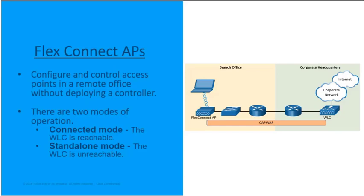The first mode is connected mode. In connected mode, the wireless LAN controller is reachable across the wide area network. With this, there is CAPWAP connectivity where we can send traffic through the CAPWAP tunnel, and the wireless LAN controller performs all the CAPWAP functions like we discussed earlier with split MAC.